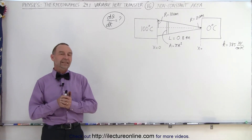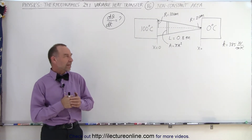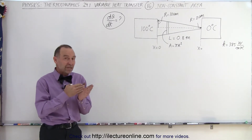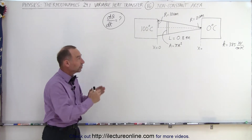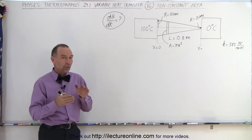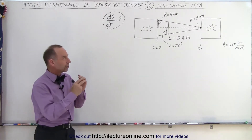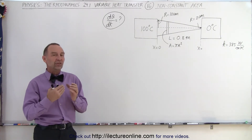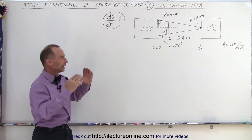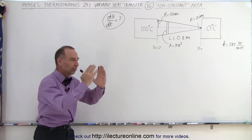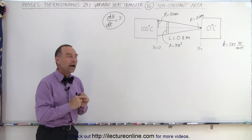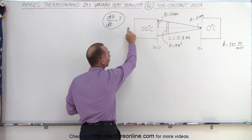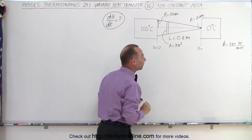Welcome to our lecture online. Now let's tackle the problem where we're seeing heat being transferred from one place to another across a conducting pad that does not have a constant cross-sectional area — it starts out being wide and ends up being narrow. How do we calculate the amount of heat being transferred per unit time?